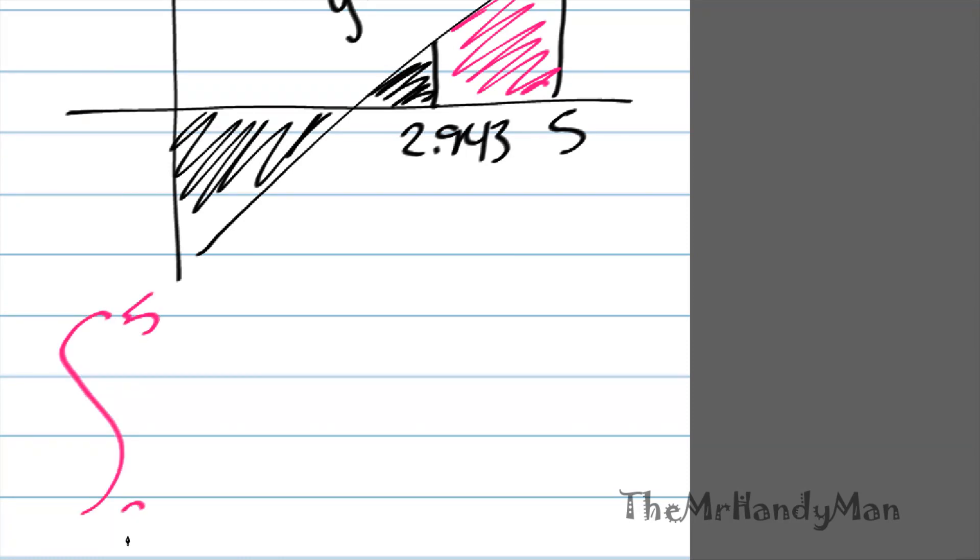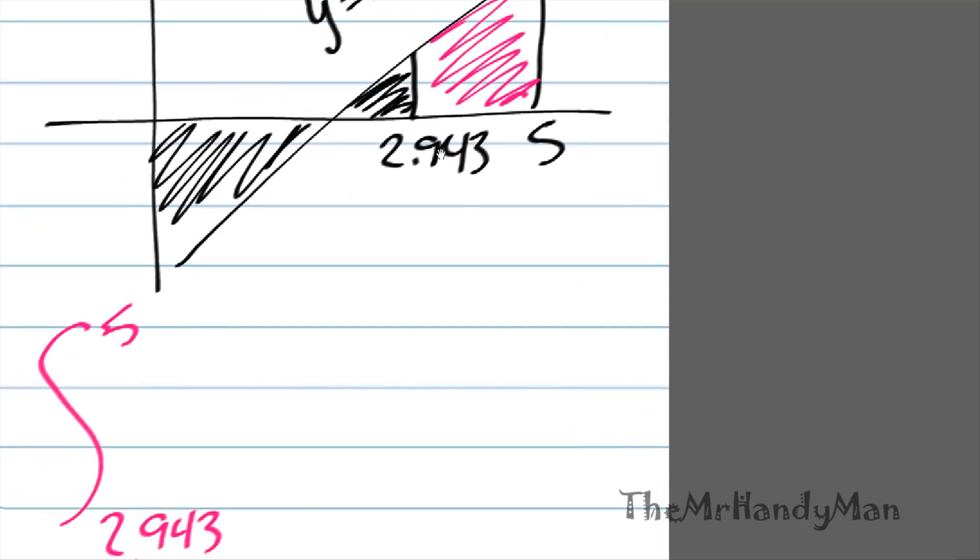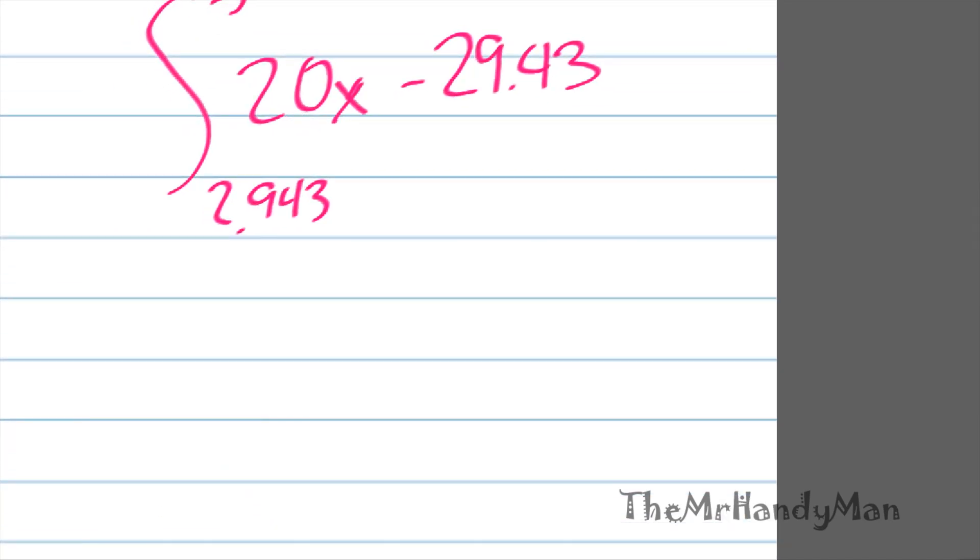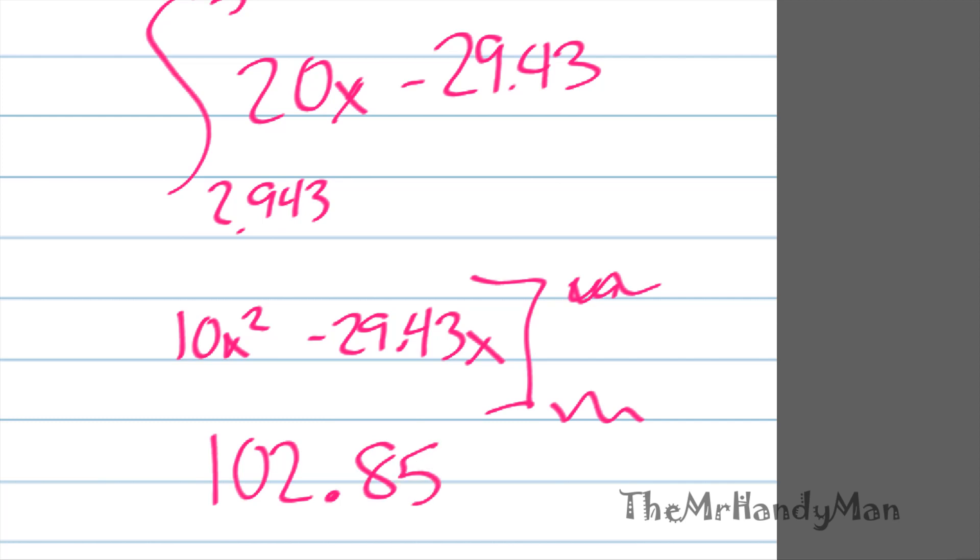Let's do that. Integral between 5 and 2.943 of 20x minus 29.43. If I run through the calculus for you, you'll get something along the line of 10x squared minus 29.43x evaluated at the same ones. Running through the numbers, you end up getting 102.85.